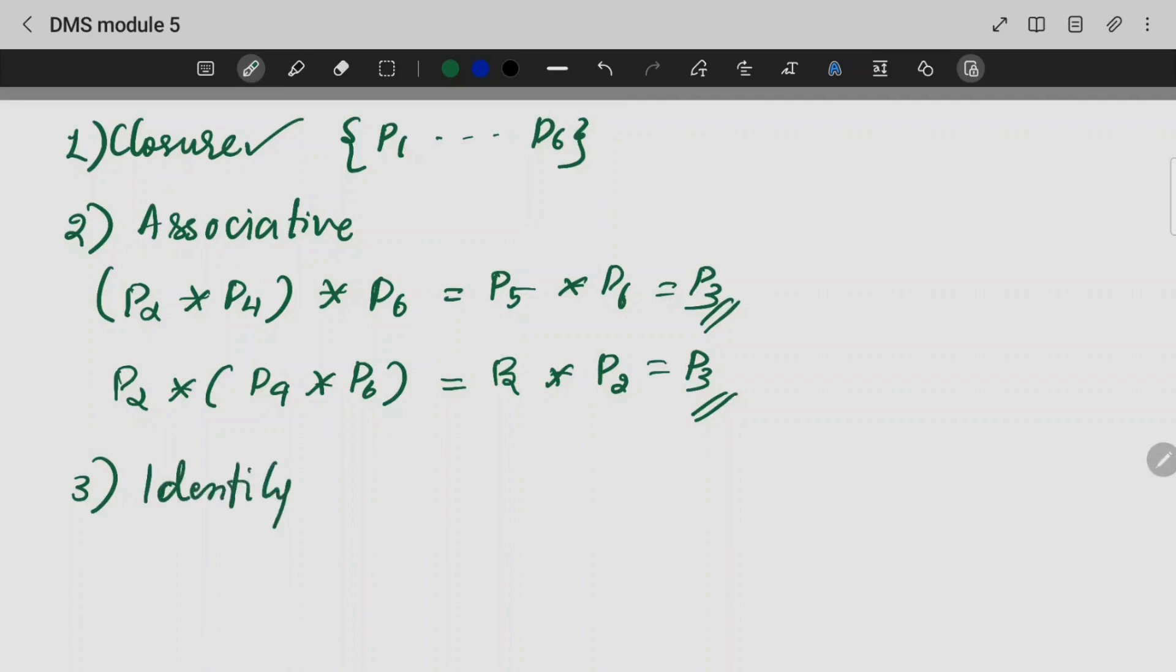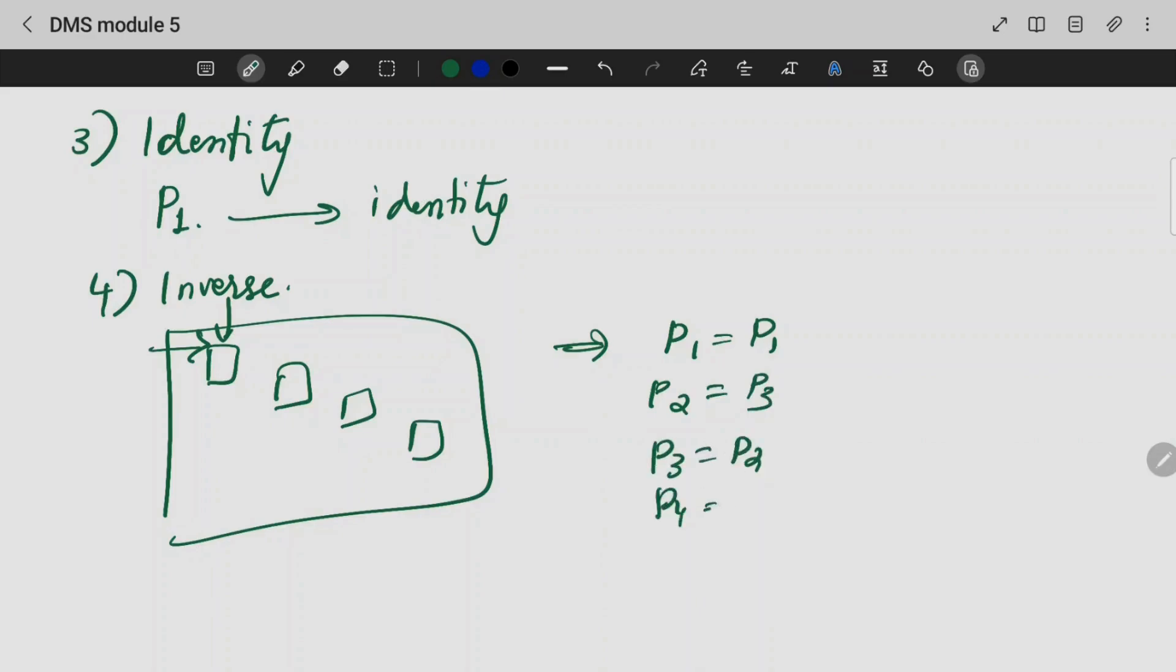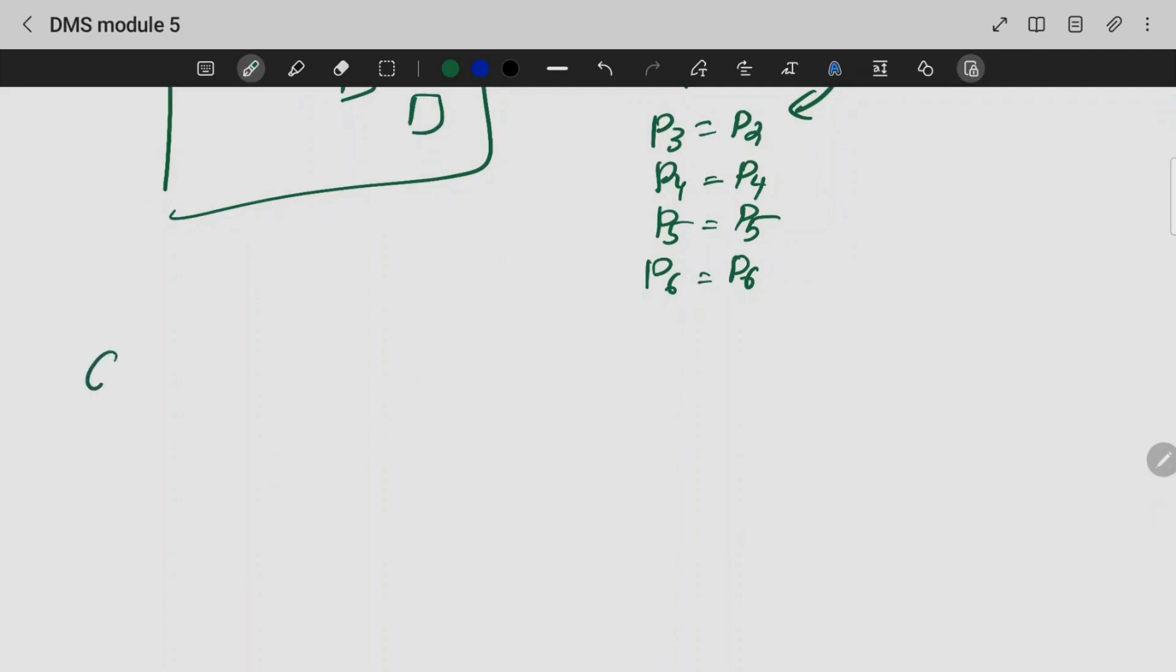Identity element is P1. Inverse: P1 inverse is P1. P2 inverse is P3, P3 inverse is P2. P4 inverse is P4. P5 inverse is P6 and P6 inverse is P5. Hence, we can prove that the permutation group which has been given is a group because it satisfies all the four properties.